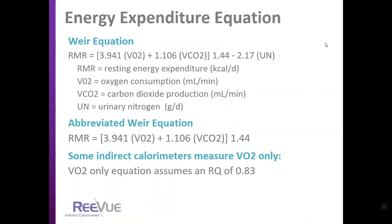The abbreviated Weir equation is used most often now, as urinary nitrogen is rarely available and fraught with inaccuracy. Most metabolic carts or indirect calorimeters have this equation already programmed in, so there's no need to memorize it — but it's good to know what your metabolic cart is calculating from.